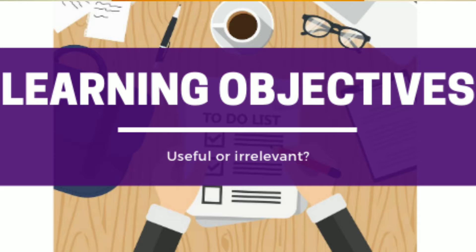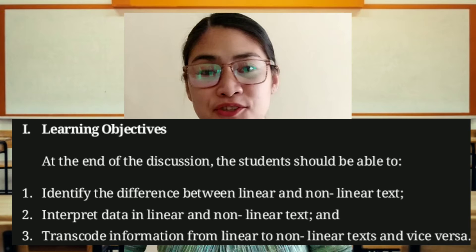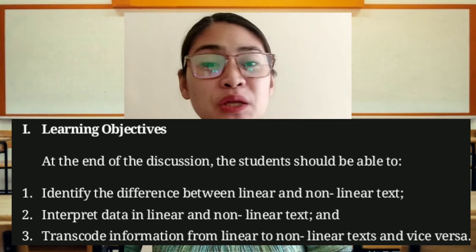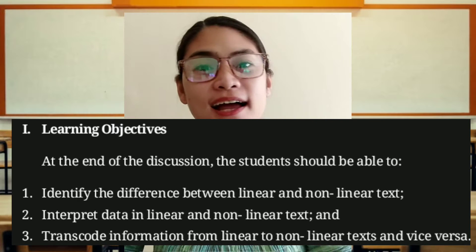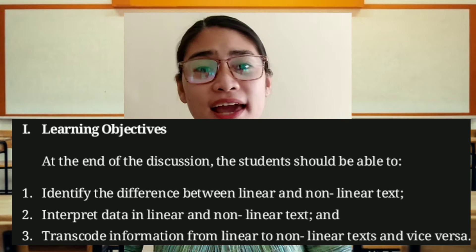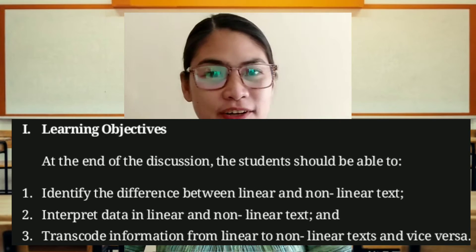And now, for the Learning Objectives, there are three domains: Cognitive, Affective, and Psychomotor. At the end of the discussion, the students should be able to: first, identify the difference between Linear and Non-linear Texts; second, interpret data in Linear Texts and Non-linear Texts; and third, transcode information from Linear to Non-linear Texts and vice versa.